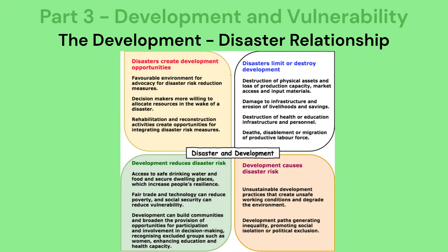This section looks at links between development and vulnerability, specifically the development-disaster relationship. You should understand this relationship and be able to explain the factors involved, both economically and socially. Disasters can create development opportunities — in the wake of disasters, decision-makers can be more willing to make changes, including disaster risk measures that reduce future vulnerability. Disasters can also destroy development: physical assets are destroyed, causing a loss of production capacity, market access, and input materials, while damage to infrastructure, livelihoods, and the workforce can become a longer-term issue.